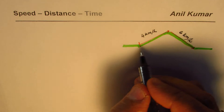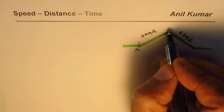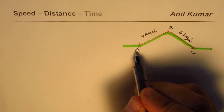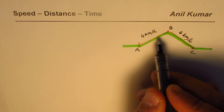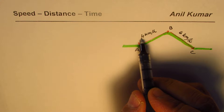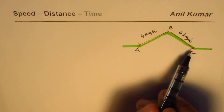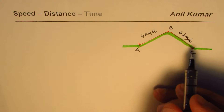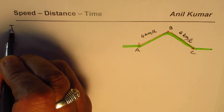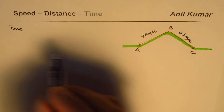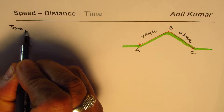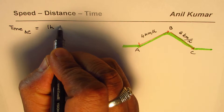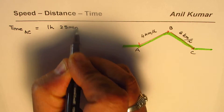We'll call these points A, B, and C, where B is the top of the hill. The person starts from A, reaches point B at an average speed of four kilometers per hour, and then comes down to point C at six kilometers per hour. The time taken to go from A to C is one hour and twenty-five minutes.